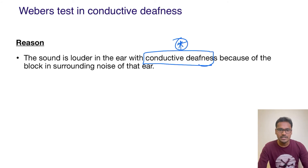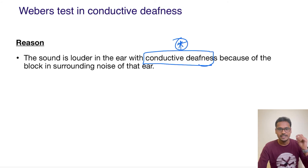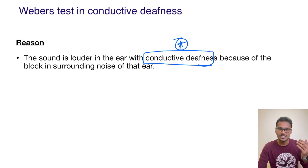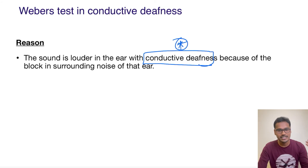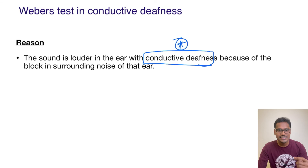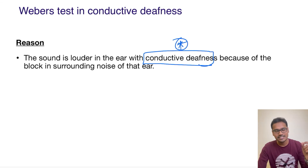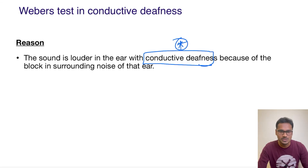So the sound will be perceived better in the affected ear — it is just like masking that ear and hearing the sound, which is why it will be heard louder on the affected side. Whereas in case of sensorineural hearing loss, it can get lateralized to the normal side.